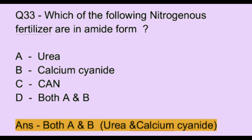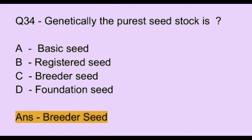Question number 33. Which of the following nitrogenous fertilizers are in amide form? Option A: urea. Option B: calcium cyanamide. Option C: CAN. Option D: both A and B. The correct answer is option D, which is both A and B — urea and calcium cyanamide.